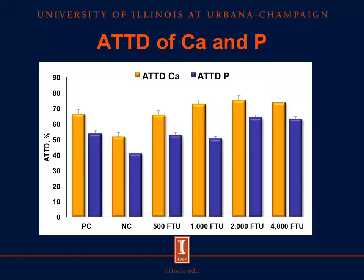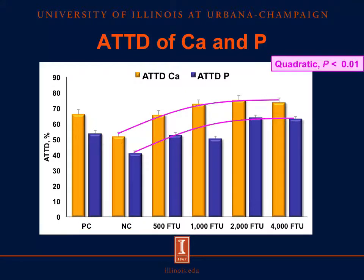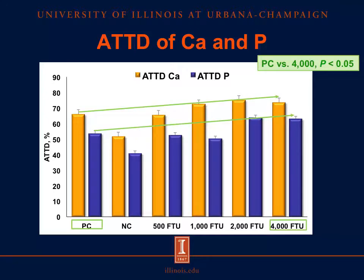Finally, the results of apparent total tract digestibility of calcium, represented in orange bars, and phosphorus, in blue bars. There was a reduction in apparent total tract digestibility of calcium and phosphorus of pigs fed the negative control diet compared with pigs fed the positive control diet. The addition of phytase increased quadratically the apparent total tract digestibility of calcium and phosphorus when added to the negative control diet, and pigs fed the negative control diet plus 4,000 FTU of grain enzyme had higher ATTD of calcium and phosphorus compared with pigs fed the positive control diet.